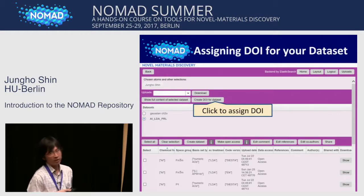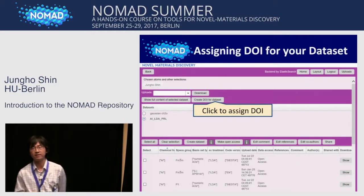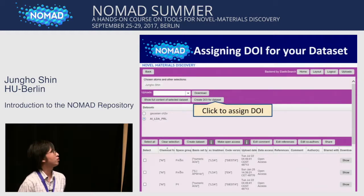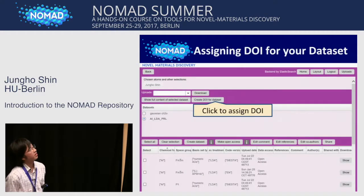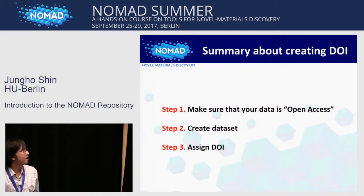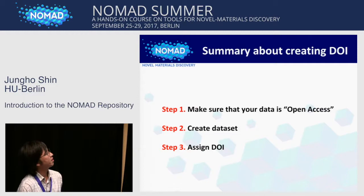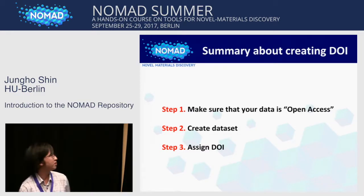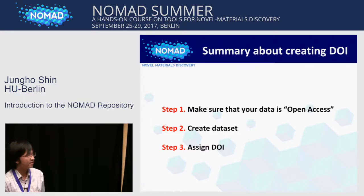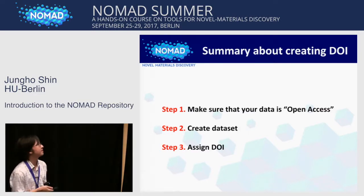If you have a dataset, you can assign a DOI to it. The step to assign a DOI is very simple — just click this button and you can get your DOI. This is a simple summary of the process: first make sure your data is open access, then create a dataset and assign a DOI. That's it.